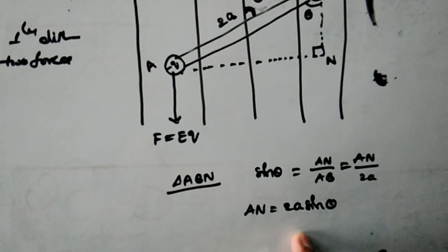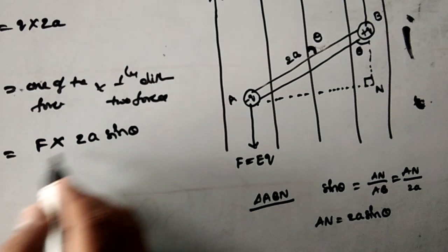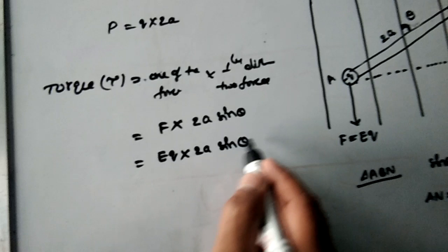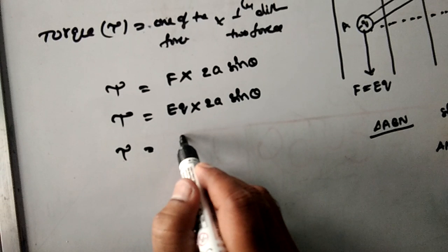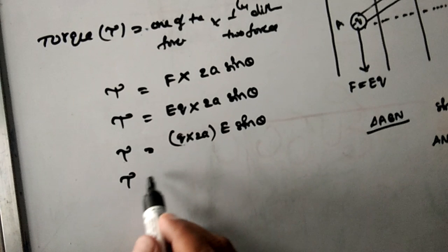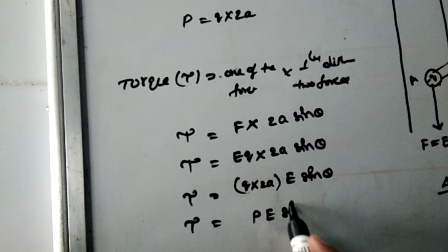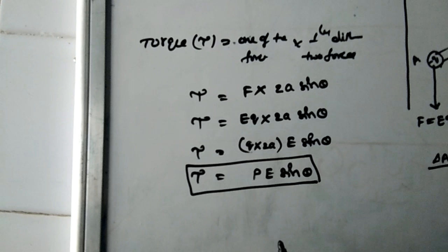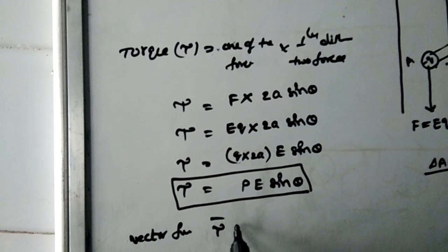Substituting into the formula: torque tau equals F into perpendicular distance equals EQ into 2A sin theta. Regrouping, Q into 2A is the dipole moment P, so torque tau equals P E sin theta. This is the torque acting on the electric dipole in a uniform electric field.